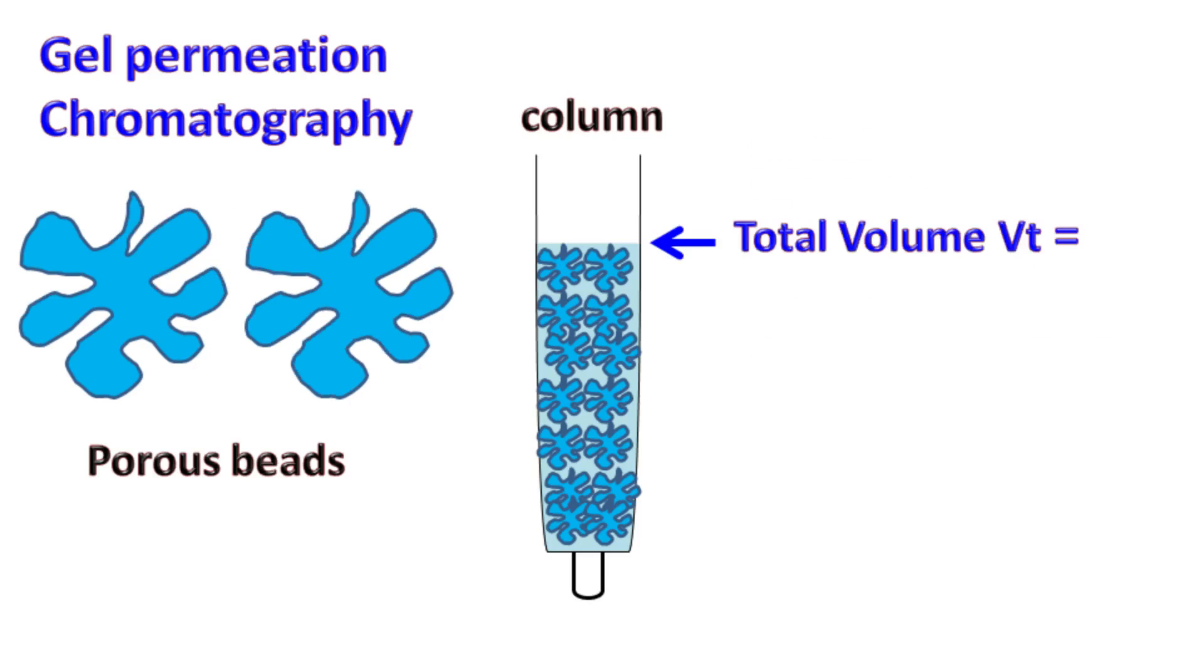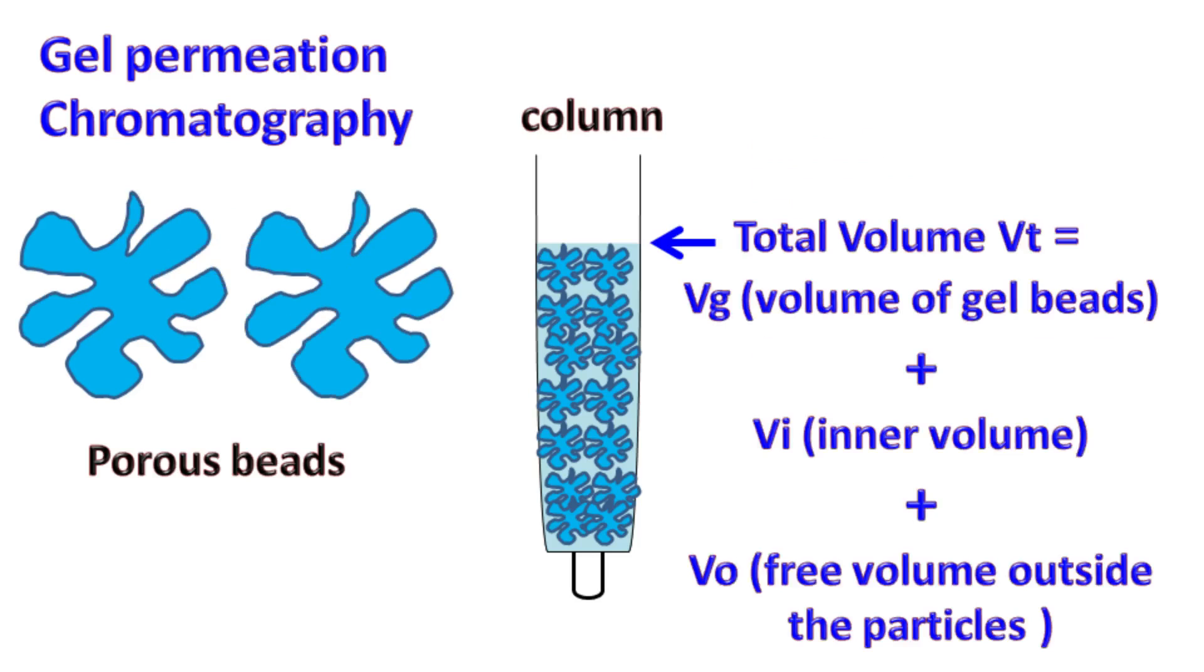The total volume occupied by the gel in the column can be given as the sum of volume occupied by the gel beads, the inner volume of the gel beads, and the free volume that exists outside the beads. In short, Vt is equal to Vg plus Vi plus Vo.